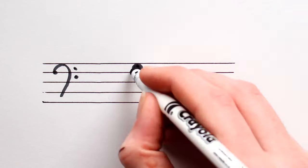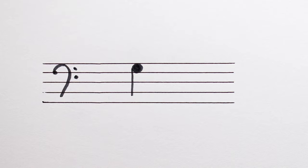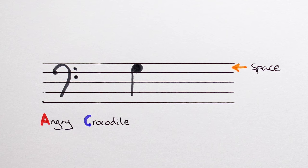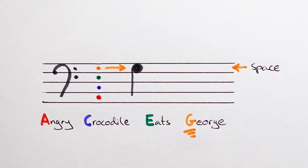Let's do another one. This time the note is in a space. So we can use the Angry crocodile eats George rhyme. Again, starting at the bottom, we say Angry crocodile eats George. G for George, so you guessed it. Our note is called G.